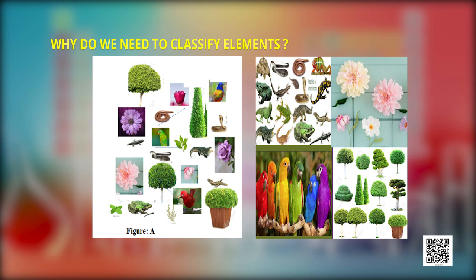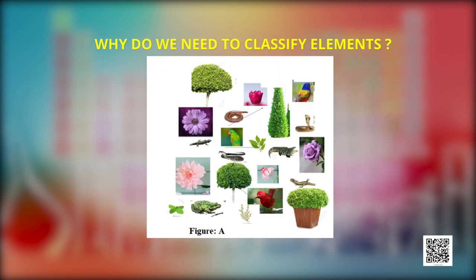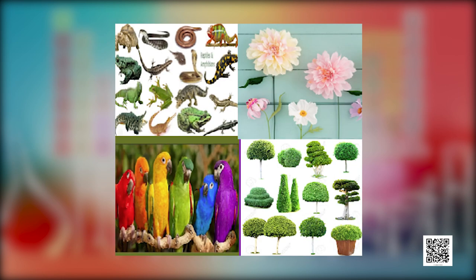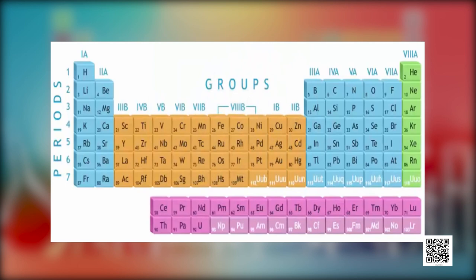In our daily life, we classify many things. For example, animals are classified as wild, domestic, birds, reptiles, etc. Plants are classified as trees, herbs, shrubs, etc. We classify matter as solid, liquid, and gas. Learning properties of one or two members gives us an idea about the rest of the group. Things that are cluttered and disorganized lead to confusion and chaos, whereas organized things reduce confusion. This leads to the need to classify and organize things according to similar behavior.